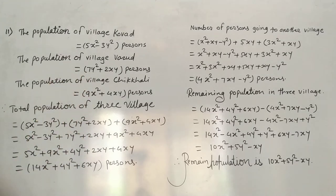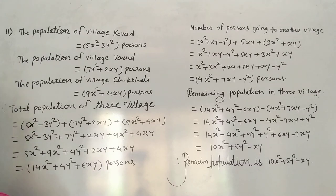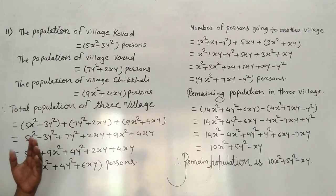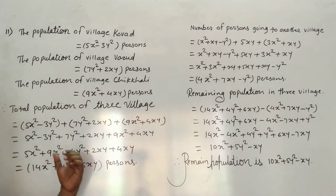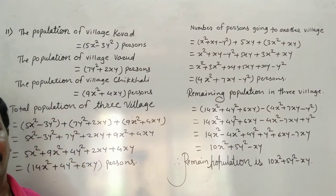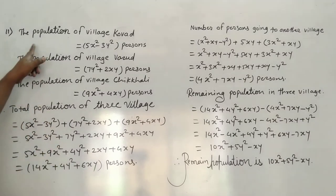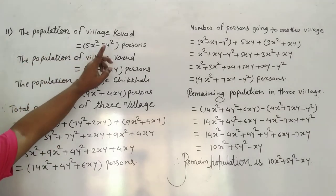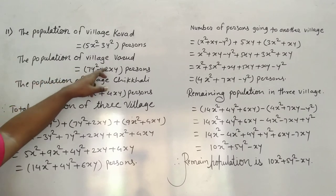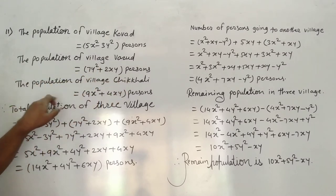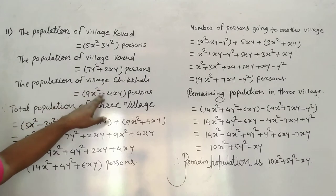At the beginning of 2017, some people from each of the three villages left for education. We need to find the remaining total population. Let the population of village Kovar be 5x² - 3y² persons, village Warul be 7y² + 2xy persons, and village Chikli be 9x² + 4xy persons.